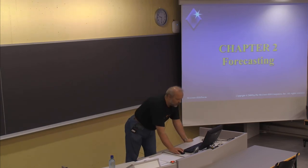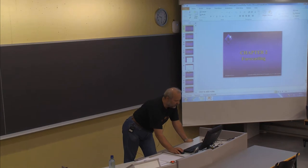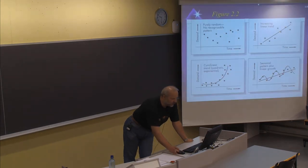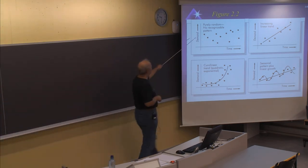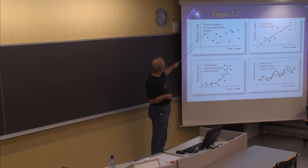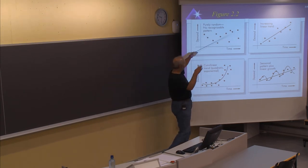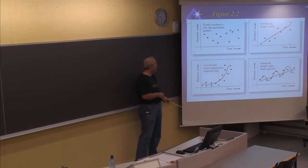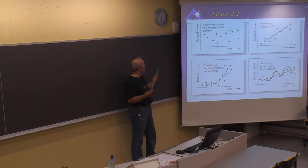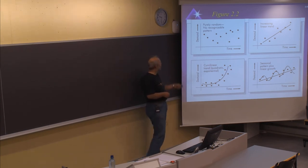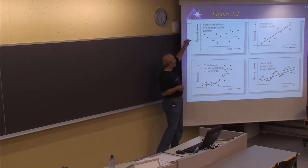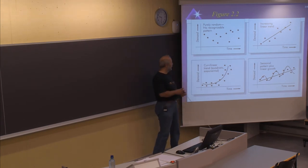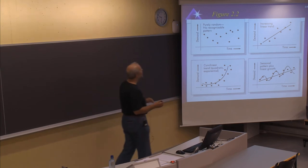Let's do a short repetition of what we have done so far in forecasting. We looked at different types of development of demand. In the first example, there is no clear pattern — it decreases a bit, increases, and goes up and down from one period to the next. When demand behaves like this, the way to forecast is to find the average value and assume that average for coming periods.